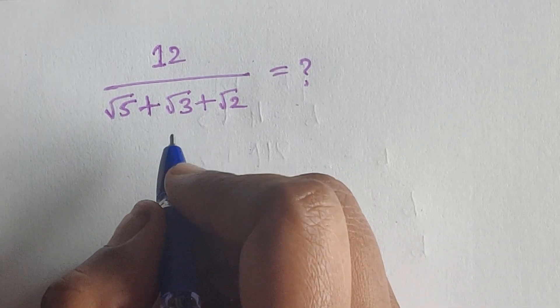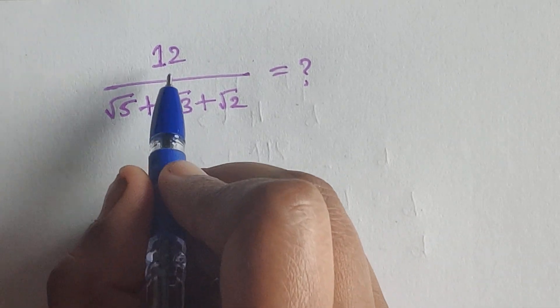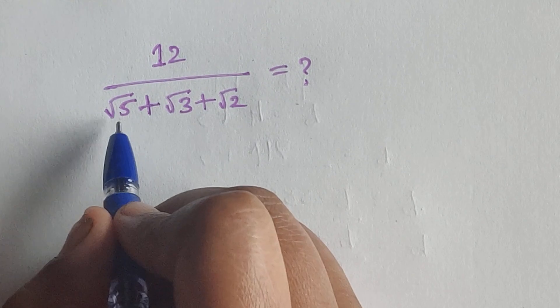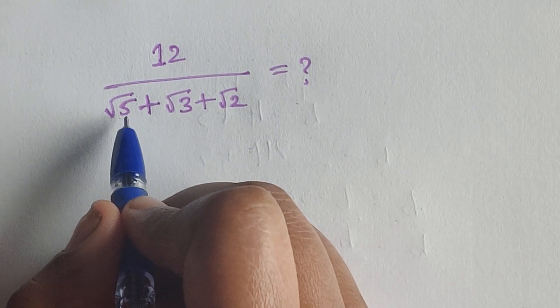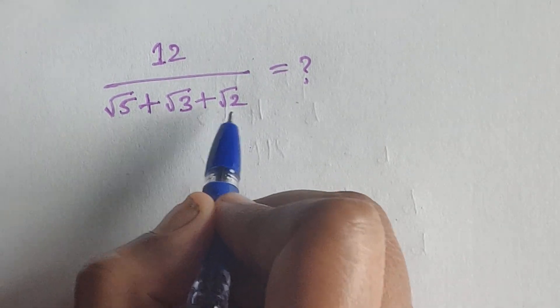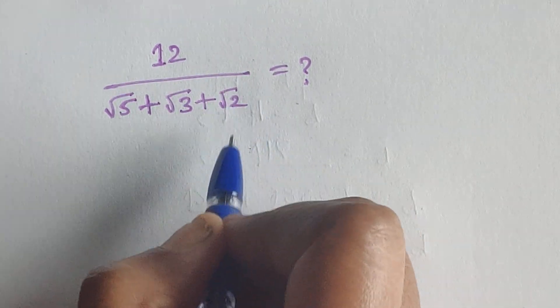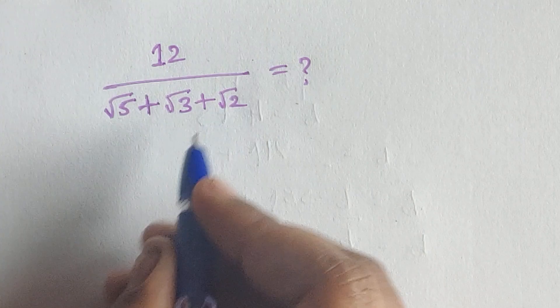Hello everyone, welcome back to our channel. Here we have one problem: 12 divided by square root of 5 plus square root of 3 plus square root of 2. So how do we solve this problem? Let's see.